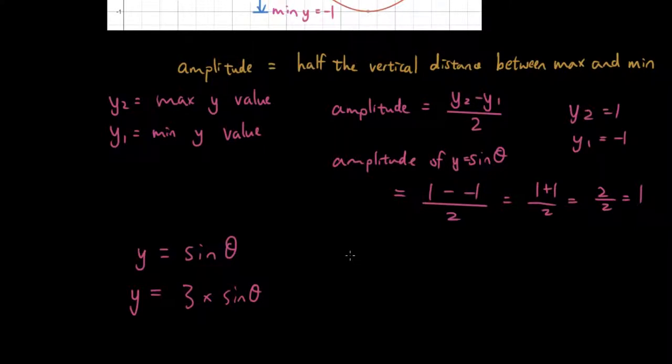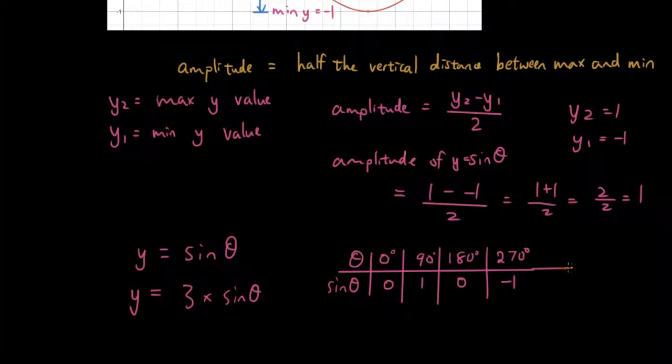Let's have a look. Originally, when theta was 0, sine theta was 0. Theta is 90, sine theta was 1. Theta was 180 degrees, sine theta is back to 0. 270 degrees, negative 1. 360 degrees back to 0.